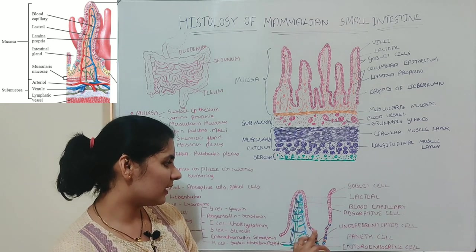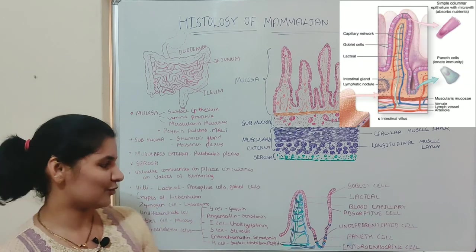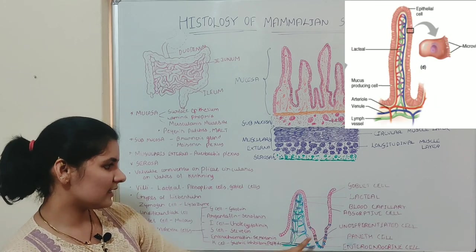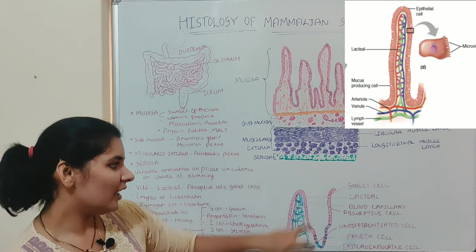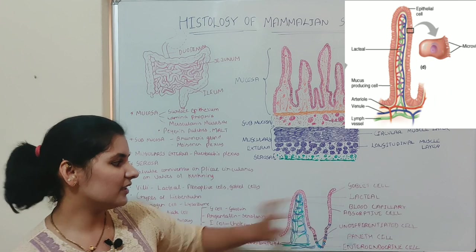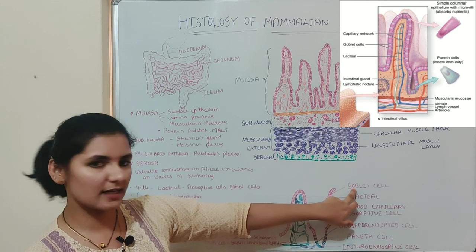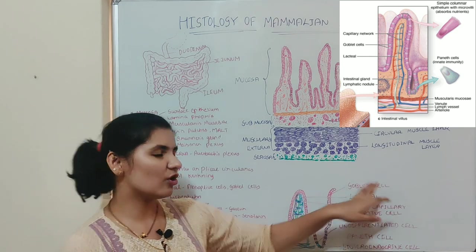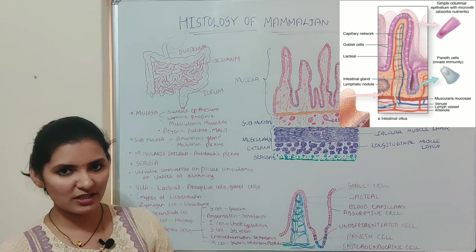The epithelium layer covering the villi is made up of a single layer of columnar cells and consists of mainly two types of cells: absorptive cells and goblet cells. Absorptive cells are long, elongated cells with basal nuclei. They also have tightly packed microvilli at the apical part of each cell, which increases the absorptive surface. In between the absorptive cells, goblet cells are present. Goblet cells, also known as mucus cells, secrete mucus which protects and lubricates the inner lining of the small intestine.